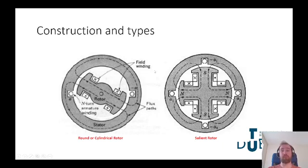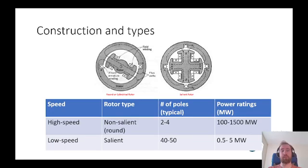Our stator's windings are connected to our three-phase AC supply, while our rotor tends to be connected to a fixed DC supply to provide our magnetic flux. If you were to compare the two, our rotor with a cylindrical or non-salient type tends to be used for high-speed applications, low number of poles, and in the power ratings of anywhere from 100 to 1500 megawatts, so for generating stations, whereas low-speed applications use the salient rotor, and these tend to be 40 to 50 pole machines, and anywhere from 0.5 to 5 megawatts.